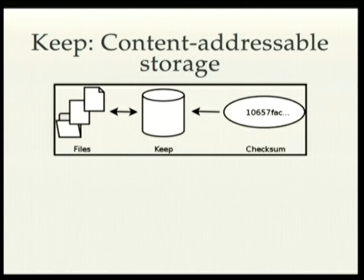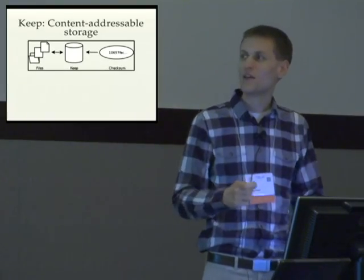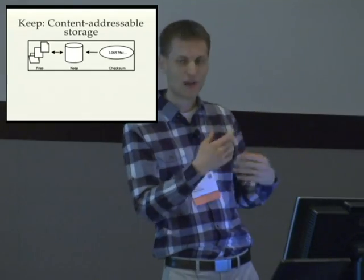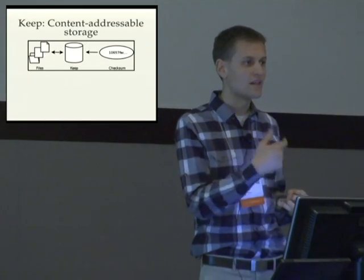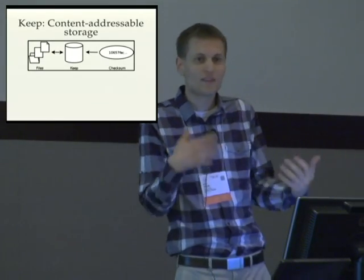Whenever you want to do any kind of analysis, you need to start with some data. In the Arvados system, the first thing you do is upload that data to our storage system called Keep. Keep is content addressable storage. When you want to get the data back, you refer to it by the content itself — or rather, we use a cryptographic checksum, the MD5 sum in our specific case. When you put the data into Keep, you provide the data and its checksum. Keep double-checks that you got it right, stores your data, and returns it to you when you request it by checksum.